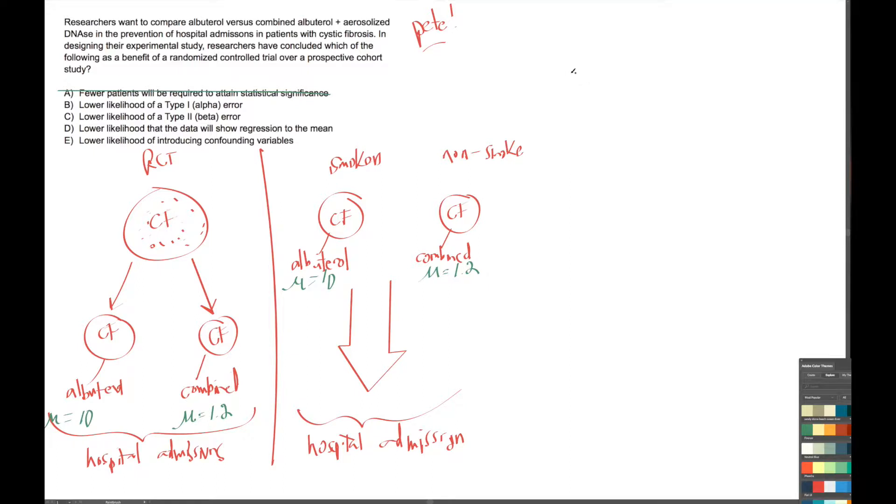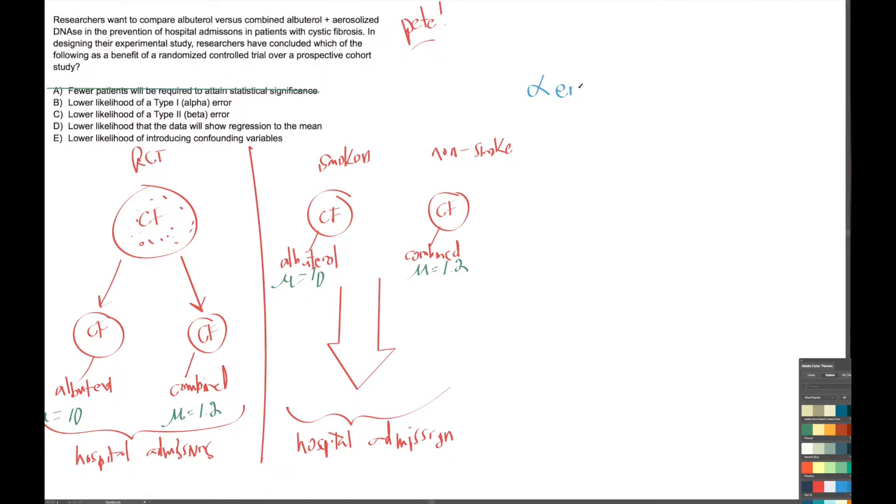I'm going to give you a nice mnemonic that I like. So what is an alpha error? I have a nice little mnemonic for this one. Once we remember what alpha error is, beta error is easy—it's just the other one. So let's first talk about what alpha error is.